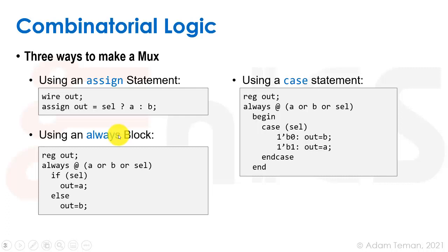We can also do it in a more elaborate way using a combinational always block. Signals on the left-hand side in an always block — combinational or sequential — are always of type reg in Verilog. So: always at a or b or cell (or just always at star). If cell equals 1 then out equals a, else out equals b. Out is a reg, and a, b, and cell must be inside our sensitivity list or else we could have latch inference.